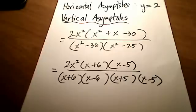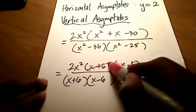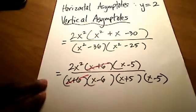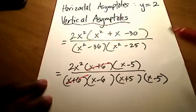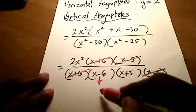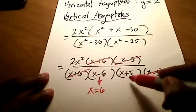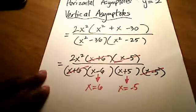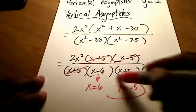All four of those values make the denominator 0, so the function is undefined at those four points. However, not all four are vertical asymptotes — (x + 6) appears in both numerator and denominator and cancels out, and so does (x − 5). After cancellation, there are really only two vertical asymptotes: x equals 6 and x equals negative 5.